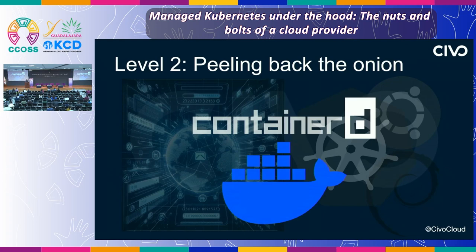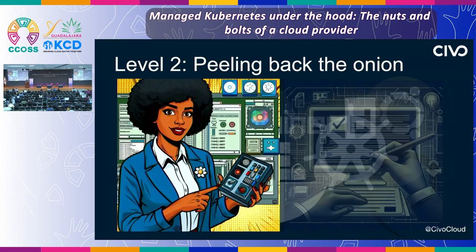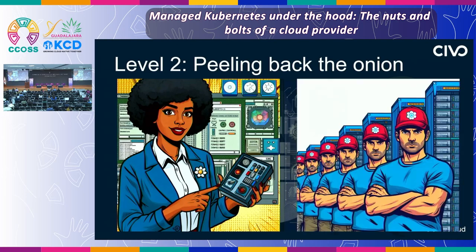We shouldn't forget about the container runtime — that needs to be installed as well. It could be containerd, it could be Docker, it could be whatever. Then you create cluster certificates, and this allows the nodes to talk to each other and belong to the same group. Once the virtual machines are running on a network, the cluster is ready for control plane initialization. The control plane is going to need worker nodes to run the containers and do the actual workload. So we create a join token that we share with the worker node virtual machines, and each uses that join token to report ready for duty and start performing work.